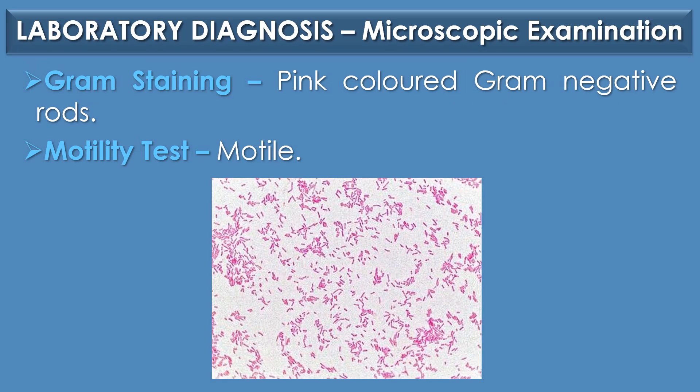Laboratory diagnosis of E. coli: The first diagnostic method is microscopic examination. Under gram-staining, E. coli is observed as pink-colored gram-negative rods. In the motility test, E. coli are highly motile due to the presence of peritrichous flagella. This image shows the gram-negative rods, i.e., E. coli.